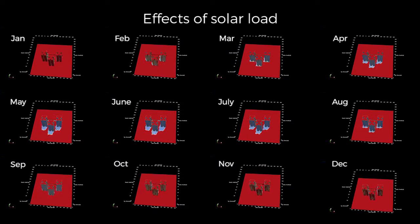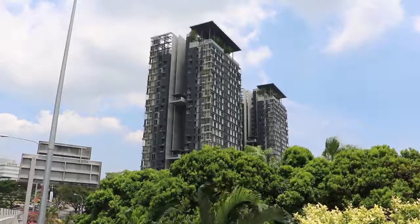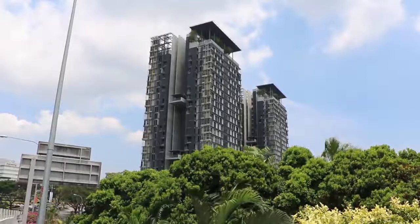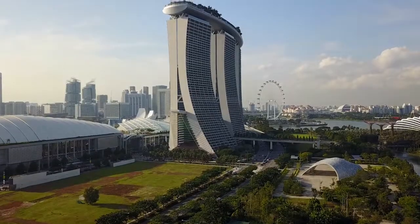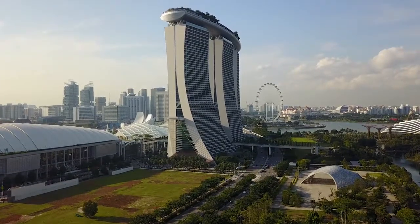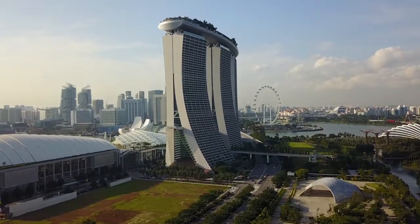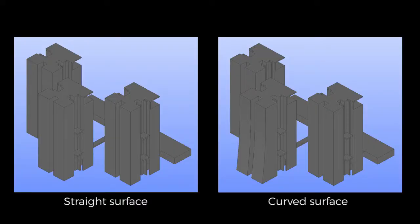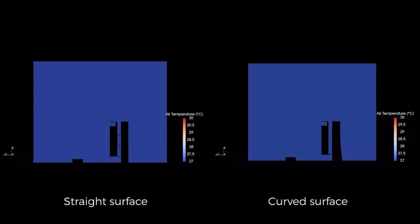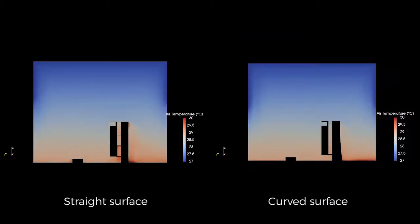The tool could be applied to evaluate the impacts of design strategies on urban thermal environment. For instance, if we change the façade shape from straight to curved to mimic that of Marina Bay Sands, we could see its impacts on surrounding air temperature. Unfortunately, such a curved façade does not help to cool down the surrounding air — if anything, it makes the situation even worse.